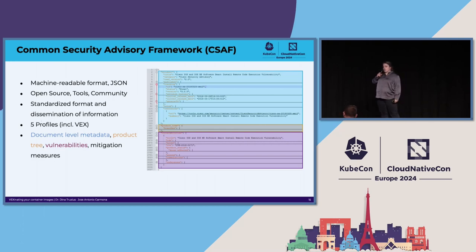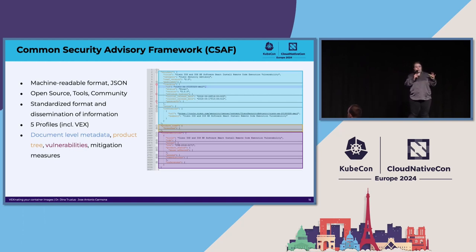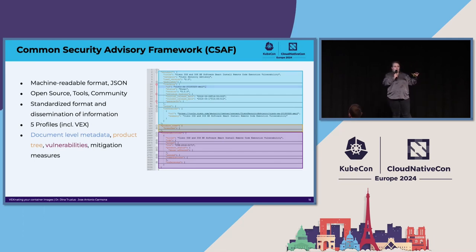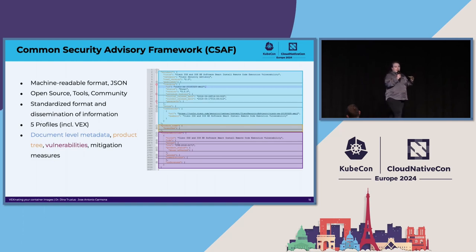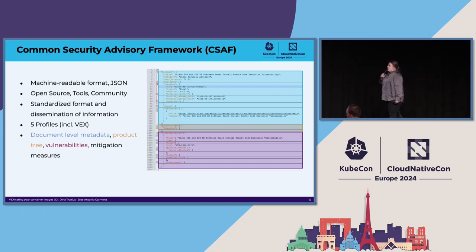How does CSAF look like? Here you see an example of a classical part of a CSAF document, a CSAF advisory. In blue, you see the document-level metadata. In the brownish-yellowish part, you see a product tree — you can enlarge it, go down to a single version, list all the products, and also have relationships between hardware and software. This is what you can communicate in this machine-readable advisory. You also have the vulnerabilities linked to each and every product, and information about whether you are affected, mitigation measures, and the usual security communication.